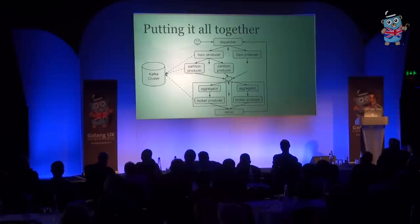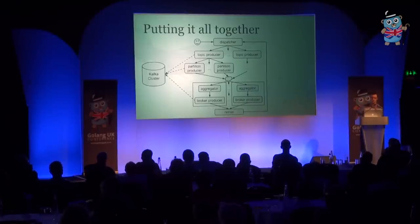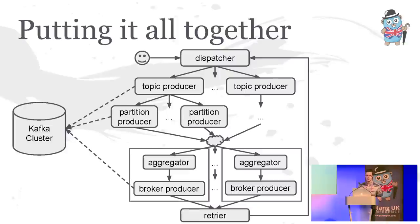So this is the completed producer — hopefully most of it makes sense now. We've gone through all the little pieces. We'll pause briefly, move on to the consumer, the other half of the puzzle. If there are any questions specific to the producer or any of the code I've just shown, now is the time.